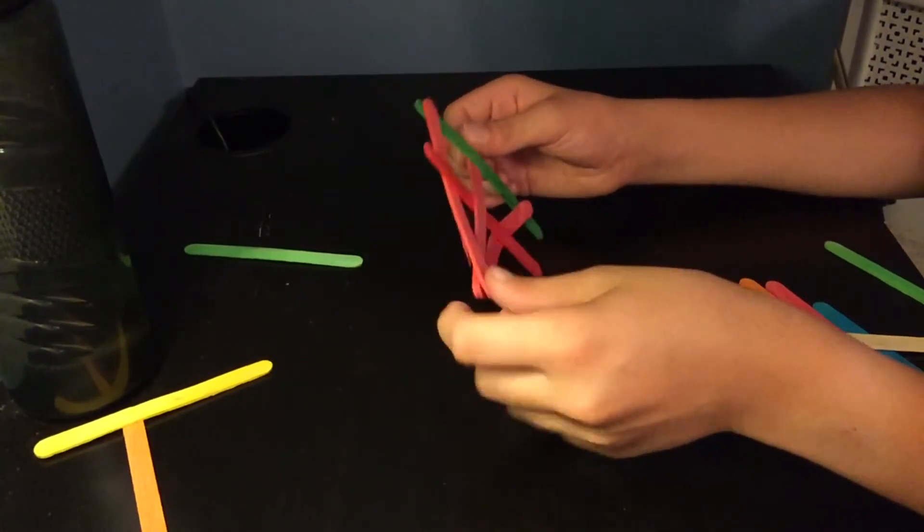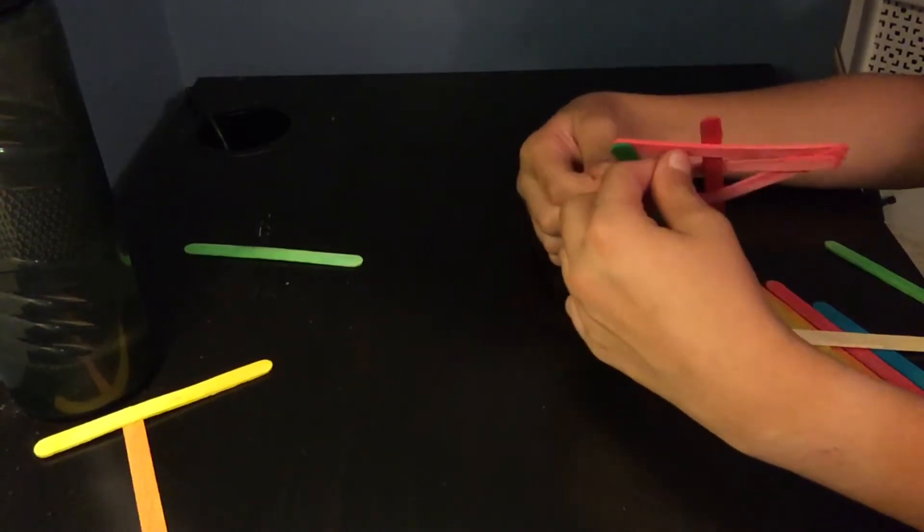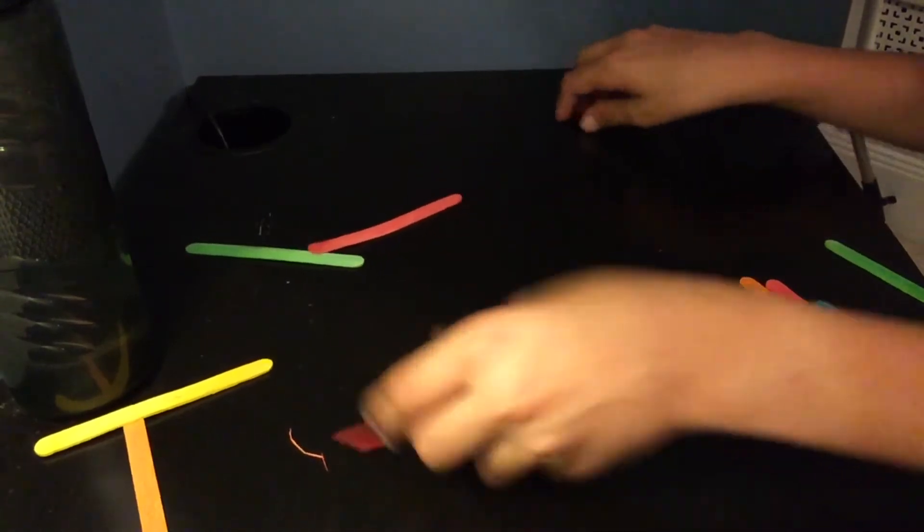If you're using popsicle sticks that are really hard and don't bend, they tend to break often. So try to use more flexible popsicle sticks. And yeah, that one just broke.